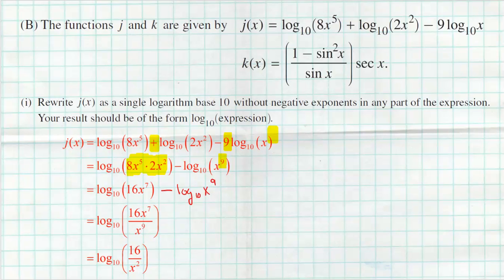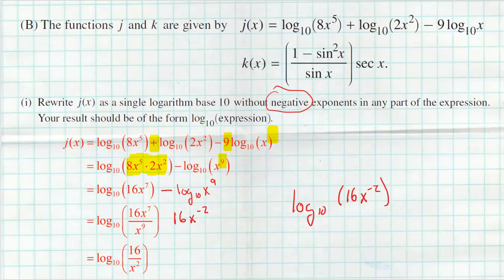Then there's a minus log base 10 of x to the ninth. When subtracting two logs, I bring them together as division: 16x to the seventh divided by x to the ninth. Since there are nine x's on the bottom and seven on top, that leaves x squared on the bottom — so 16 over x squared. If you subtract exponents you get x to the negative two, but since the problem says no negative exponents, move it to the denominator. The final answer is log base 10 of 16 over x squared.